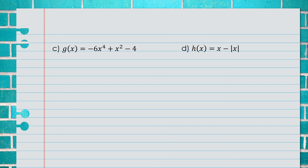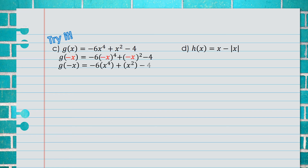Example C is the try-it problem: g(x) = -6x⁴ + x² - 4. You should have plugged in negative x for every x, then simplified, paying close attention to the signs. Once simplified, you would have found that all of the signs were the same as the original, so this is an even function.